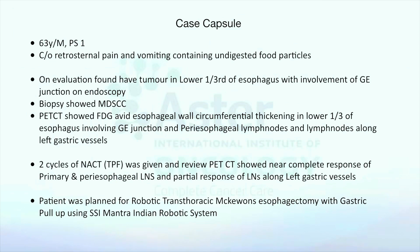FDG PET was done, which showed FDG-avid esophageal wall circumferential thickening involving the lower one-third of esophagus and G-junction with periesophageal lymph nodes and lymph nodes along the left gastric vessels. Two cycles of neoadjuvant chemotherapy with TPF were given. Review PET CT showed near-complete response of the primary and periesophageal lymph nodes and partial response of lymph nodes along the left gastric vessels.